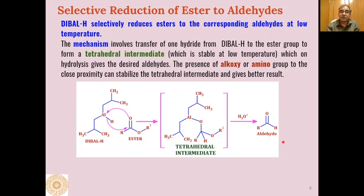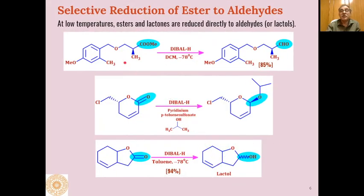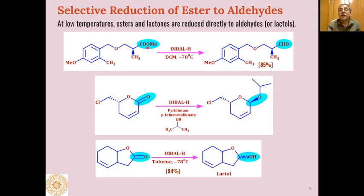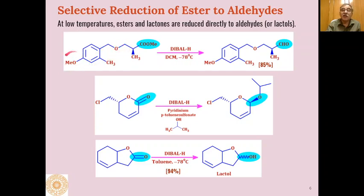In examples where the ester functional group is converted to an aldehyde: when an ester is reacted with DIBAL-H in dichloromethane or toluene solvent at a very low temperature of the order of minus 78 degrees centigrade, we get 85% of the product where the ester functional group is converted into an aldehyde through the tetrahedral intermediate formed on reaction with DIBAL-H. The reaction is selective because the ether linkage — alkyl ether or aryl-alkyl ether — present in the molecule is not affected by DIBAL-H.